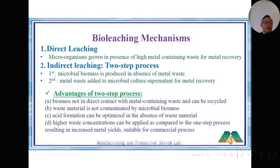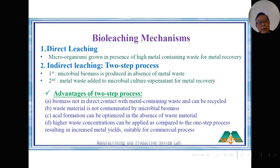The other option is so-called indirect leaching — a two-step process. We separate the growth period from the recycling period. In the first phase, we let the microbial biomass grow in the absence of metal waste — just let them grow. When they have grown, we collect the spent media but not the microbes themselves.